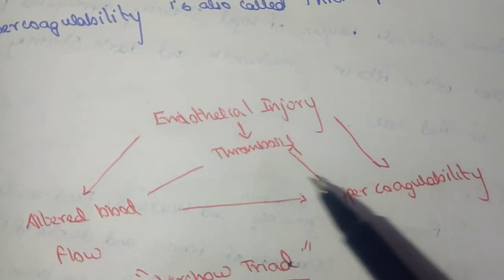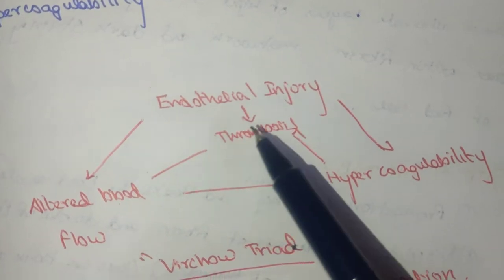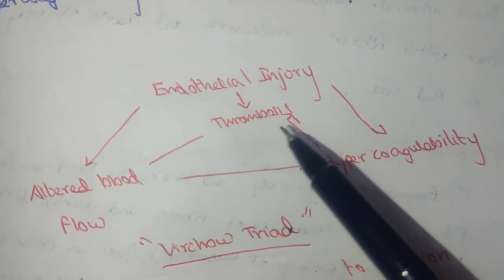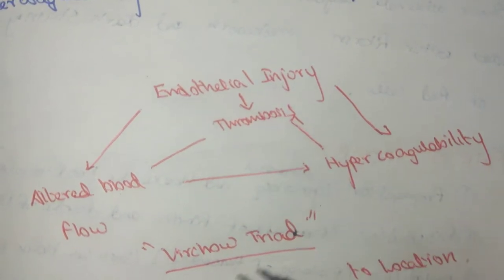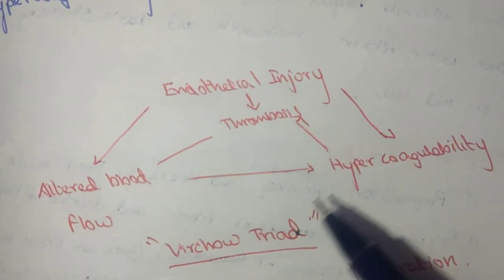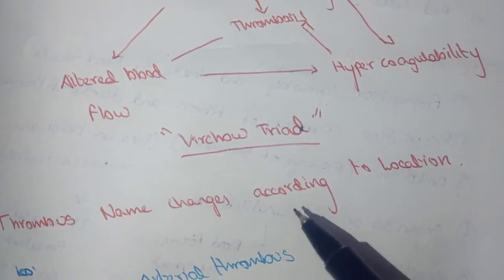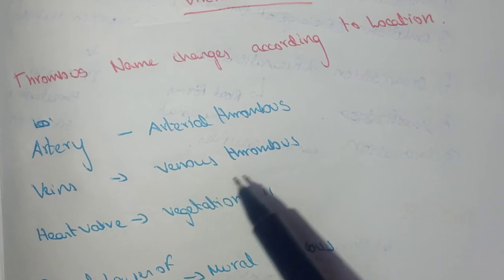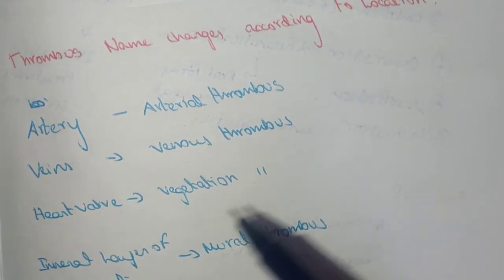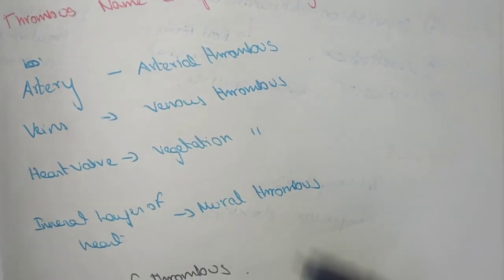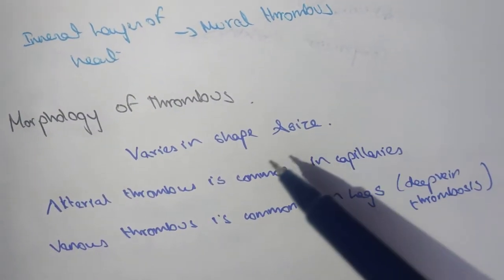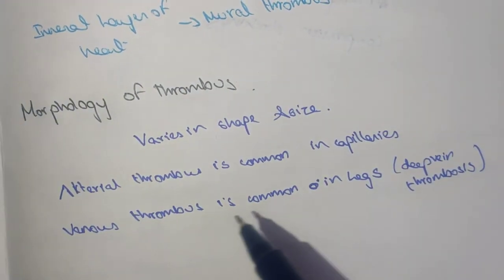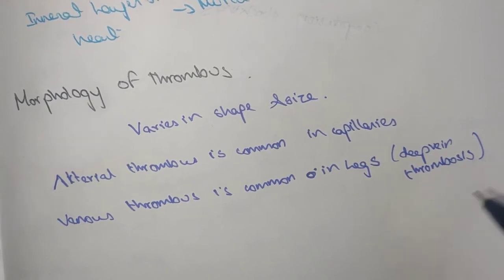This is Virchow's triad: endothelial injury, altered blood flow, and hypercoagulability — these three result in thrombus formation. The name of the thrombus changes according to its location: in an artery it is arterial thrombus, in a vein it is venous thrombus, on a heart valve it is vegetation, and in the inner layer of the heart it is mural thrombus. Arterial thrombus is common in small capillaries, and venous thrombus is common in the leg, causing deep vein thrombosis.